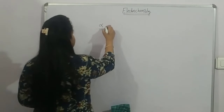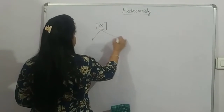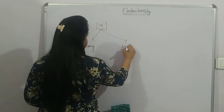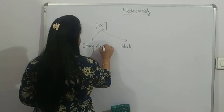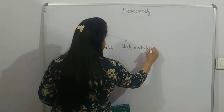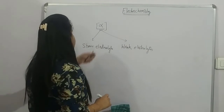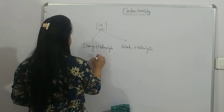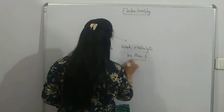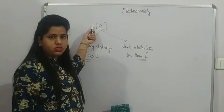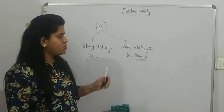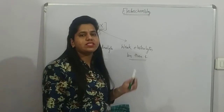For strong electrolytes, the value of alpha (degree of dissociation or ionization) is almost equal to 1. For weak electrolytes, the value of alpha is always less than 1.